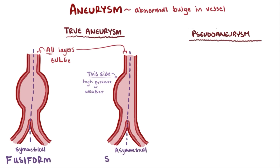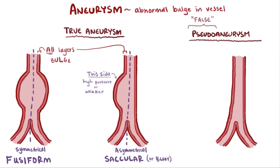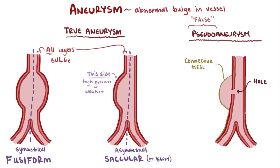Asymmetric true aneurysms can be called either saccular or berry-aneurysms. Pseudoaneurysms are false aneurysms — they're not actually aneurysms at all. They are caused by a small hole in your blood vessel which allows blood to leak out and form a pool of blood that looks like a fusiform or berry-aneurysm, depending on where the hole is and how big it is. The blood pools because the surrounding tissues act as a wall that contains the blood in one spot.